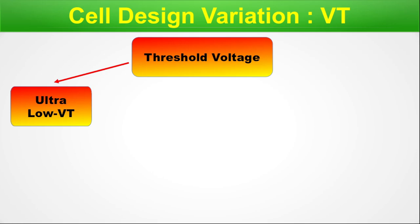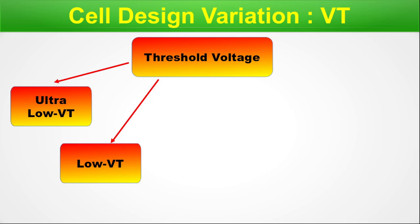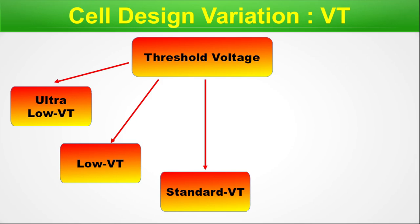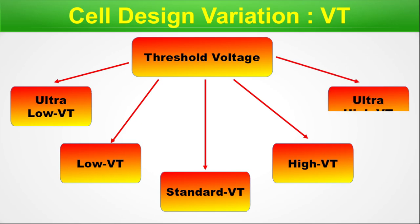Cell design variation — VT. The first thing we vary in a standard cell design is the VT, or threshold voltage. The variations are: ultra-low VT (very very low threshold voltage), low VT (a bit higher), standard VT (normal VT), high VT, and ultra-high VT. All these variations will be there in the standard cell library for each individual cell. You must be mentally prepared for multiple variations — you may have additional or fewer variations in your standard cell package.